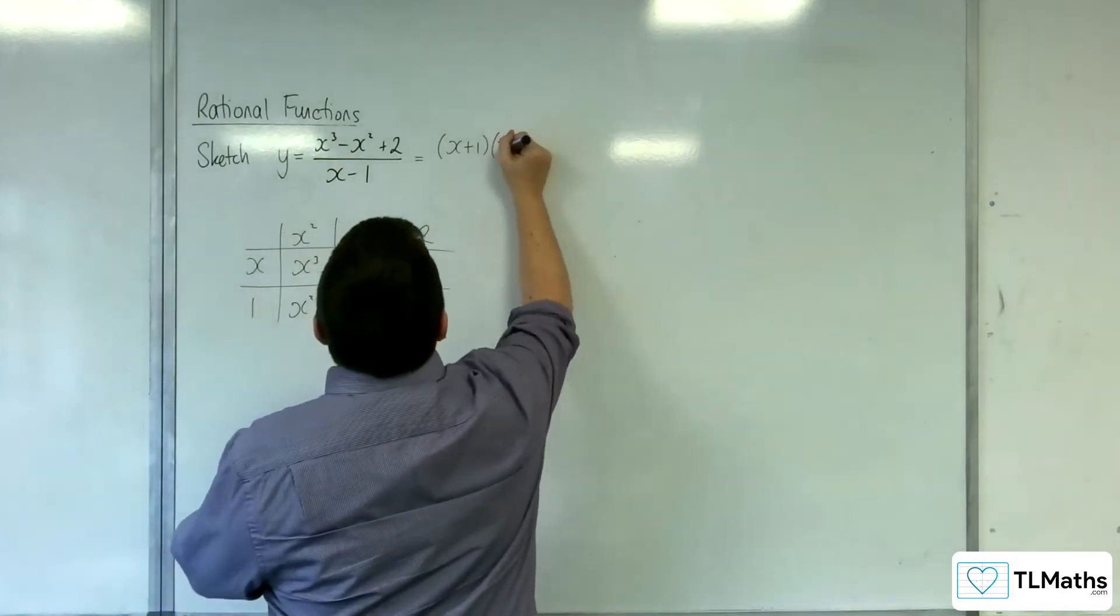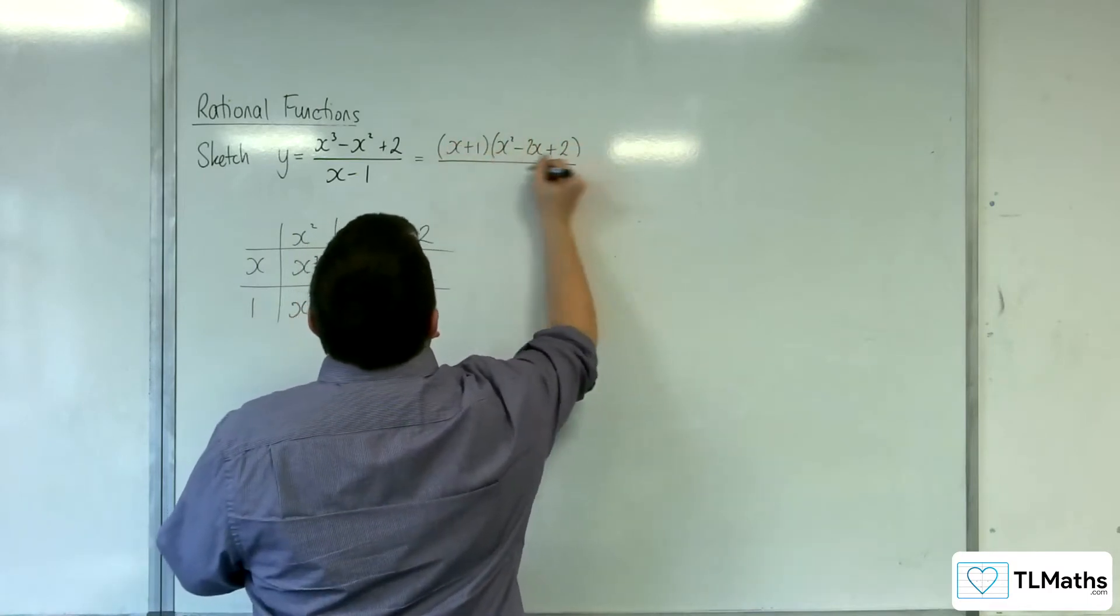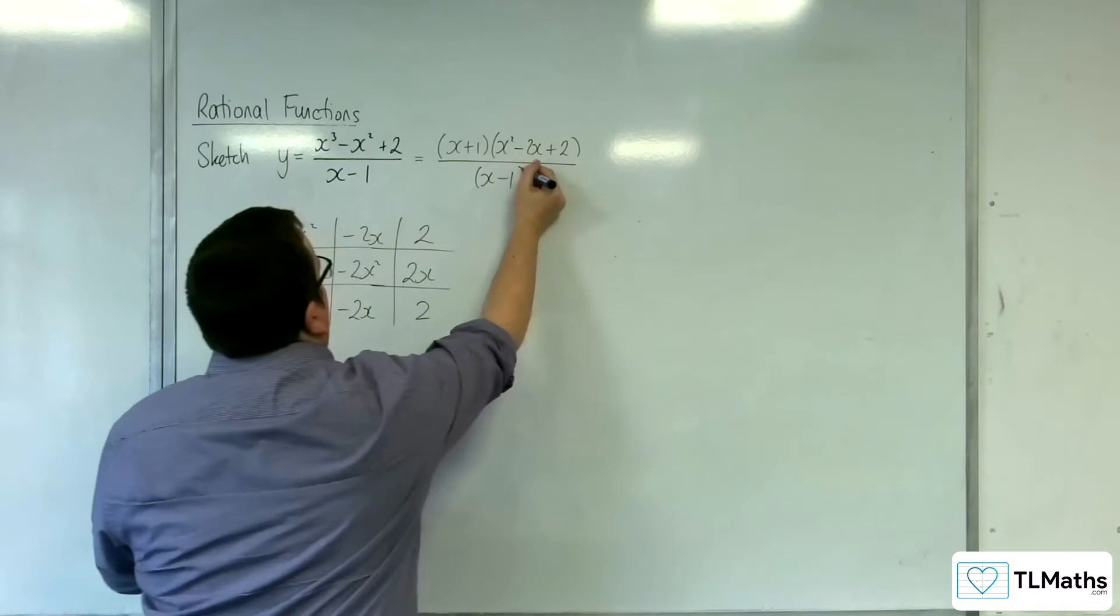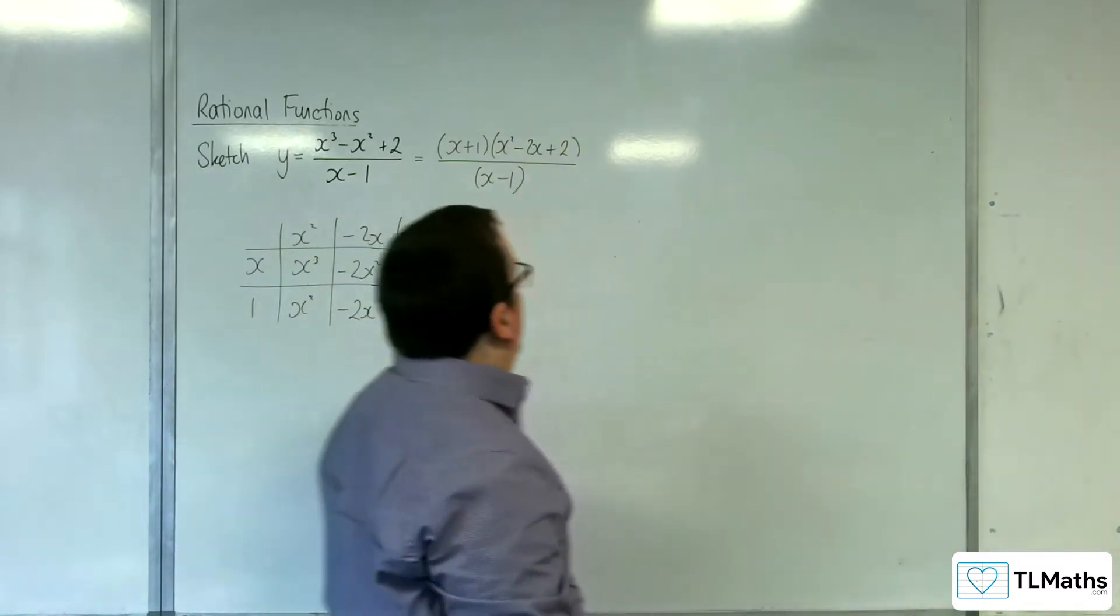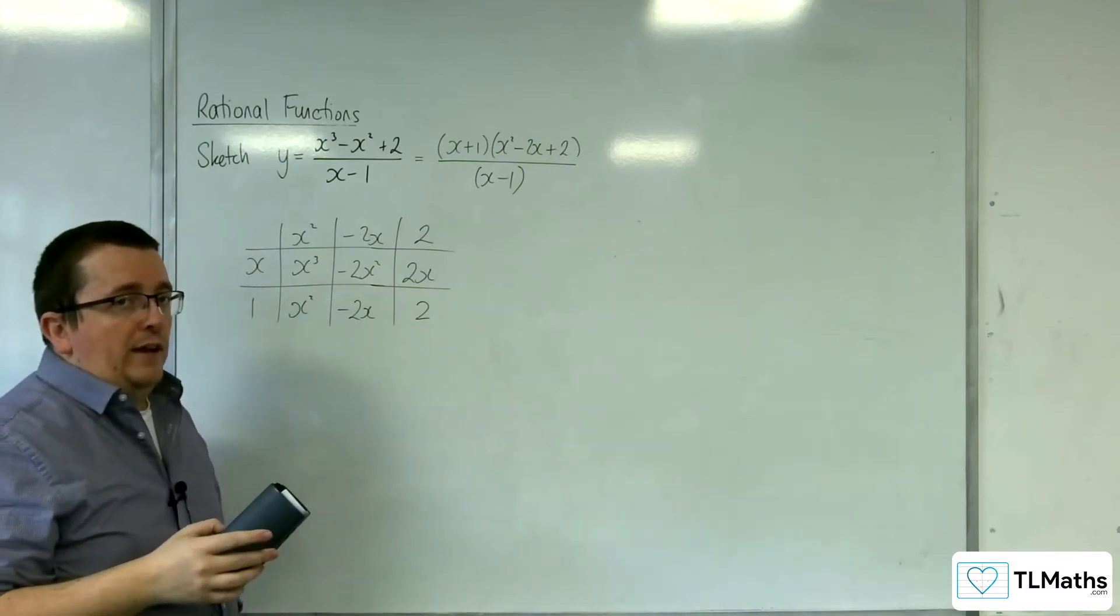So I've got x squared take away 2x plus 2, and that's over x take away 1. So what this is telling me is that there's only going to be one point of intersection with the x-axis.